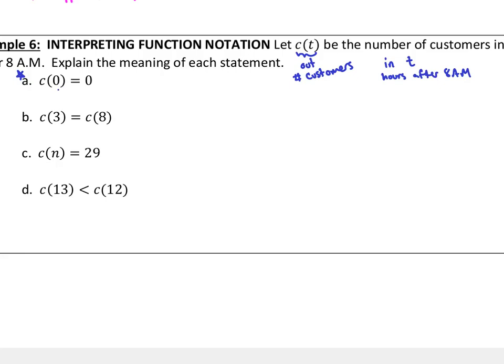C of 0 equals 0. Well, input is a 0. The output is a 0. That means there are 0 customers, 0 hours after 8 a.m. So, maybe that's when they're just about to open. Nobody's come into the restaurant yet that day. Something like that. That makes sense.